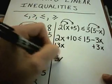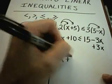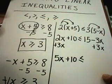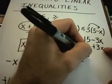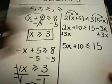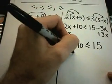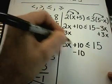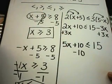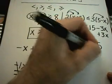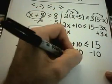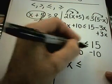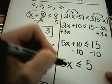So 2x + 3x gives me 5x + 10 ≤, and I've canceled out the -3x with the positive 3x. But the 15 is still hanging out. I'm going to subtract 10 from both sides. My goal is to get the x terms by themselves on one side. The 5x drops down, the tens cancel out. I'll have 5x ≤ 5.